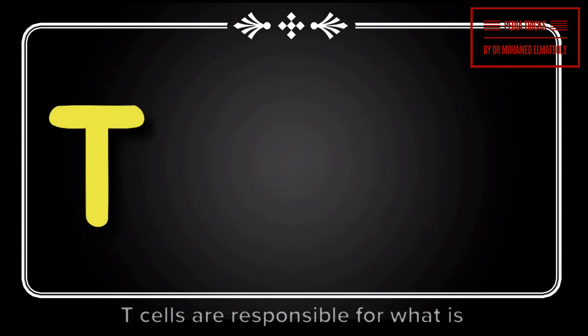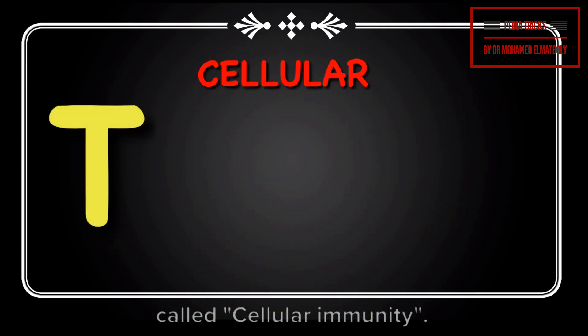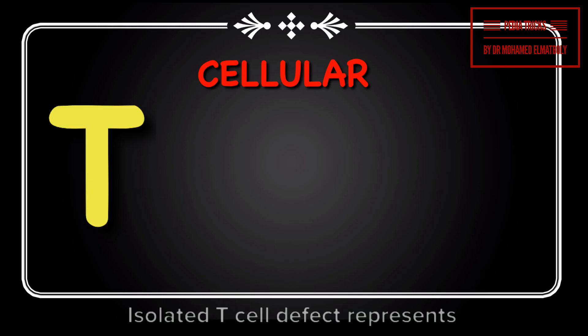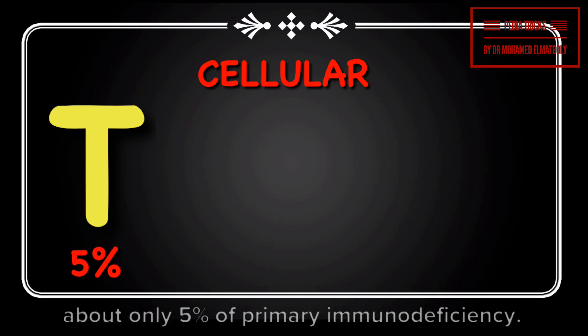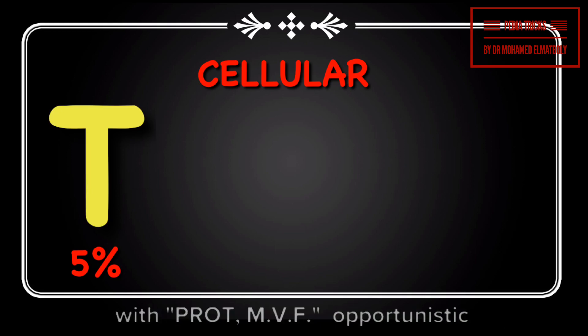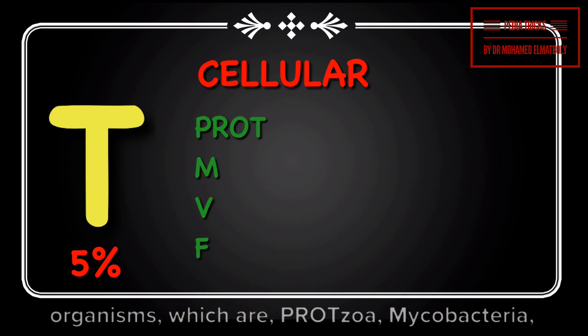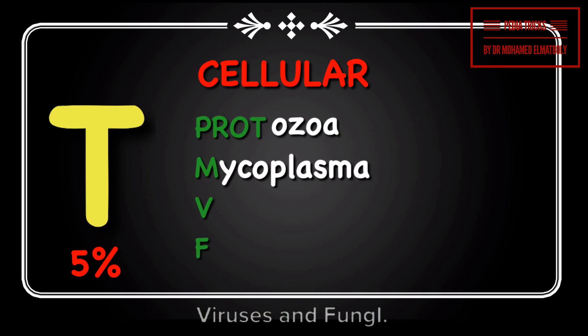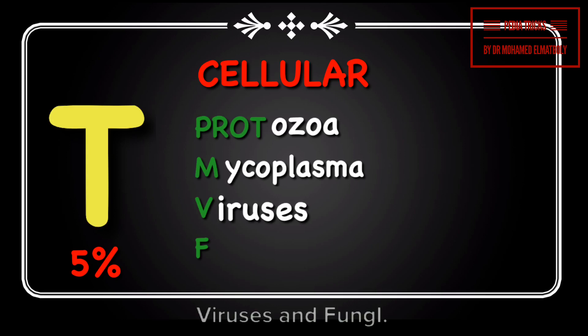T cells are responsible for what is called cellular immunity. Isolated T cell defect represents about only 5% of primary immunodeficiency. Usually present with recurrent infections with ProAT-MVF opportunistic organisms, which are: protozoa, mycobacteria, viruses, and fungi.